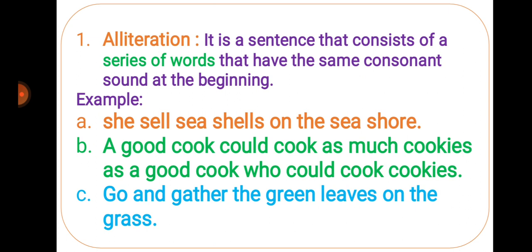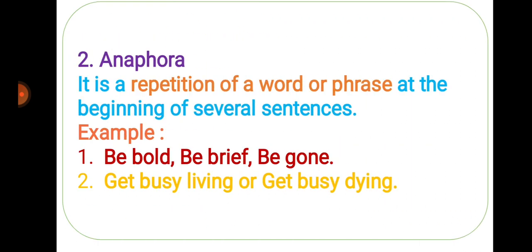A good cook could cook as much cookies as a good cook who could cook cookies. Go and gather the green leaves on the grass. So these are all the examples of alliteration.